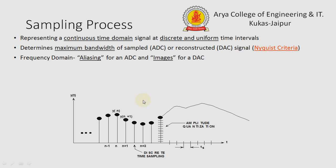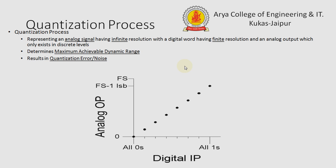For discrete sampling, the sample frequency must be equal to 2n, or we can say twice the signal frequency. The frequency domain is analyzed for an ADC, and image frequencies for a DAC. So after sampling, we move to the quantization process.